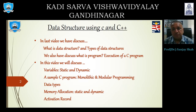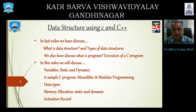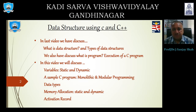Basically we have two types of data structures: physical data structure and logical data structure. In physical data structures we have examples of array and linked list, whereas in logical data structures we have examples like stack, queue, trees, and graphs. Physical data structure means how data is stored, and logical data structure means how data is accessed.